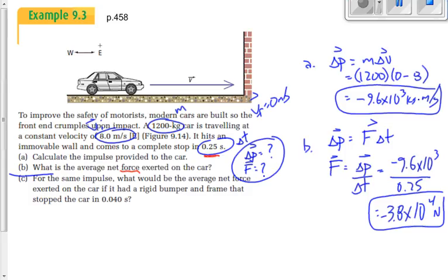Let's try C. The only difference between B and C is the number for time. F is equal to delta P over T. Delta P is negative 9.6 times 10 to the 3. Delta T is 0.04. Somebody explain to me now why delta P isn't changing. The situation has changed now. The time is a lot smaller than it was before. Why is delta P the same? The mass, the initial velocity, and the final velocity haven't changed. An object that stops will experience the same impulse no matter how it stops, no matter whether it hits a concrete wall or whether it comes to a gradual stop at a stop sign, no matter whether it has a crumple zone or not.